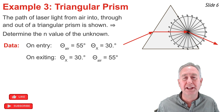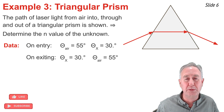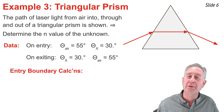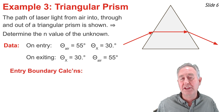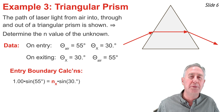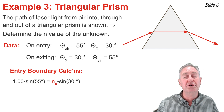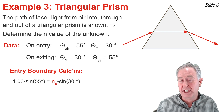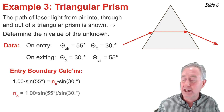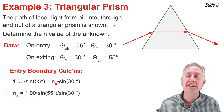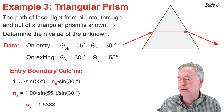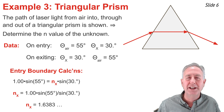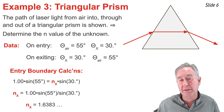I'm going to use the data to calculate the index of refraction of this unknown material, performing two calculations — one for each boundary. At the entry location on the left side of the triangle, the Snell's Law equation becomes: 1.00 times the sine of 55 degrees equals n_x times the sine of 30 degrees. I divide both sides by the sine of 30 and use my calculator — the result comes out to be about 1.6383. For the second boundary, you likely got different values, so perform the calculations there as well.